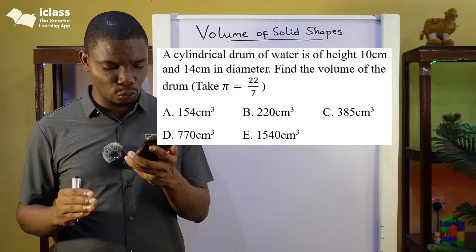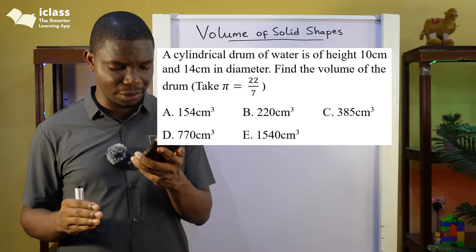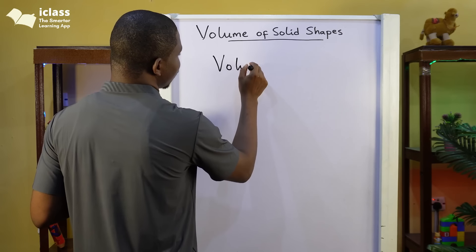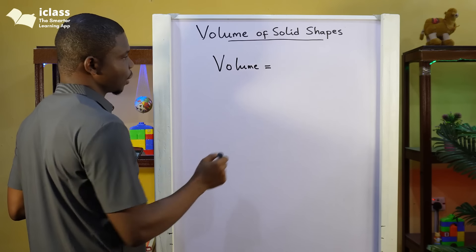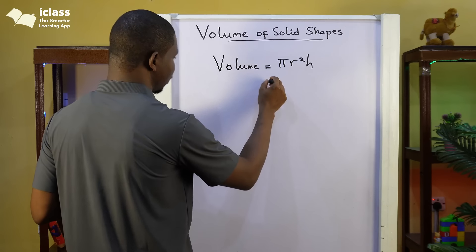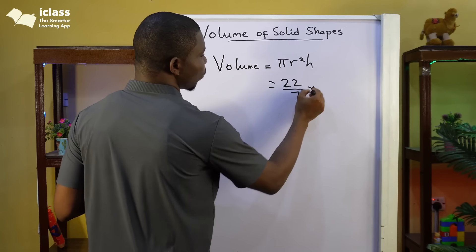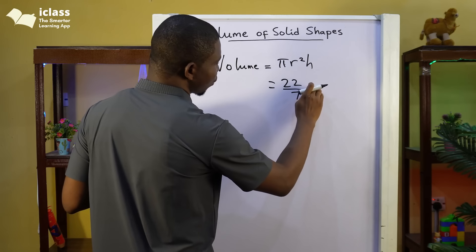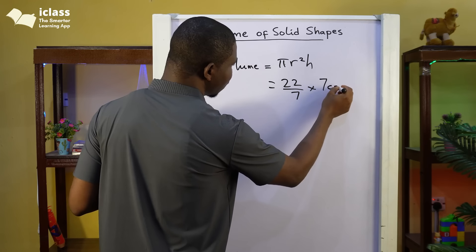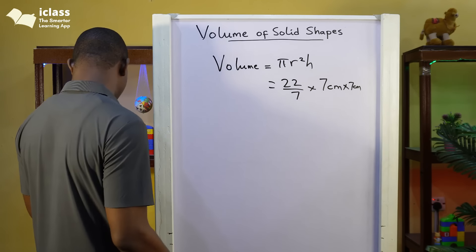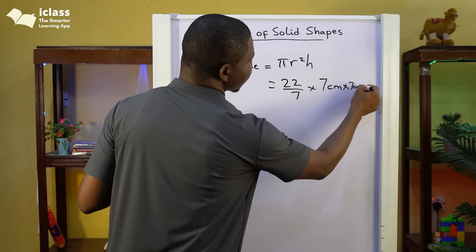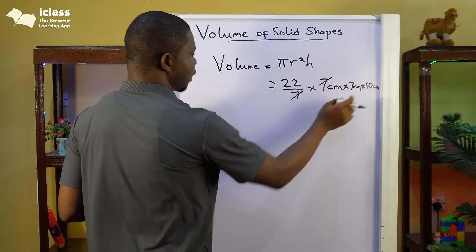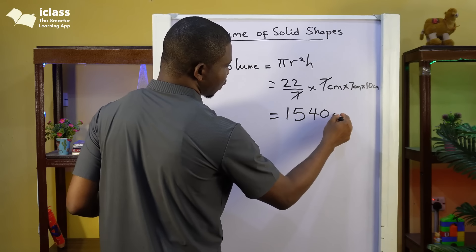Next question: a cylindrical drum of water is of height 10 centimetres and 14 centimetres in diameter. Calculate the volume of the drum. The volume of a cylinder is pi r squared h. Pi is 22 over 7. The diameter is 14 centimetres so the radius is 7 centimetres. So we have 22 over 7 times 7 times 7 times 10, which gives us 22 times 7 times 10 equals 1,540 centimetres cubed.